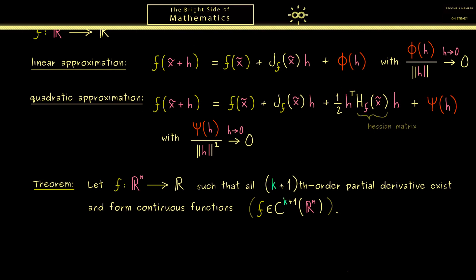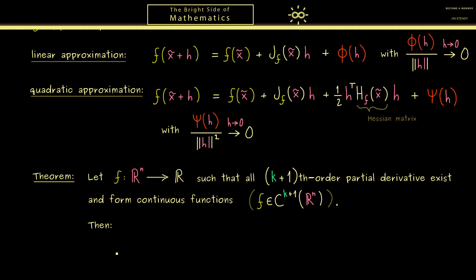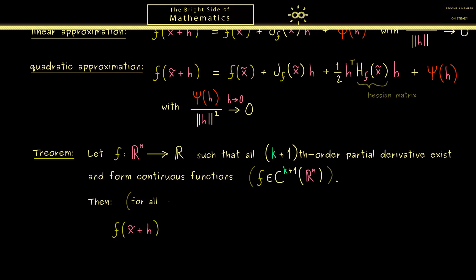Ok, by having this, we are ready to write down the formulation for Taylor's theorem. Now, with respect to what we have said before, we can summarize the result by saying we have an approximation with a polynomial of kth order. Therefore, we also consider f of x tilde plus h. And of course, here x tilde and h are elements of Rⁿ. In addition, we still call x tilde our expansion point. Ok, then the result here is that we have an approximation with a polynomial T_k.